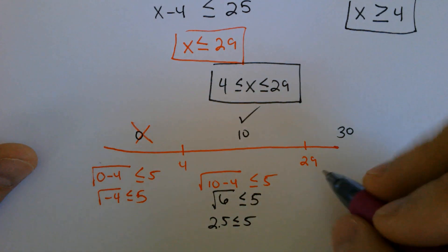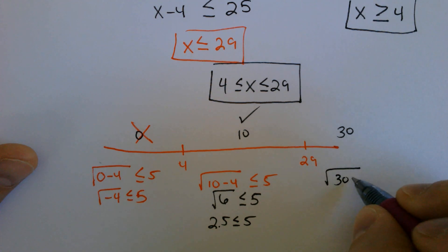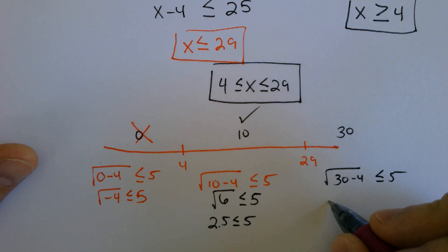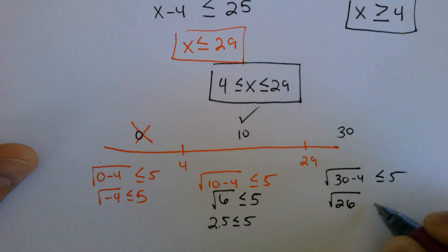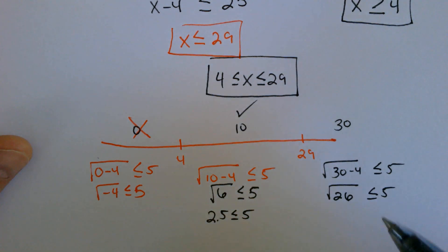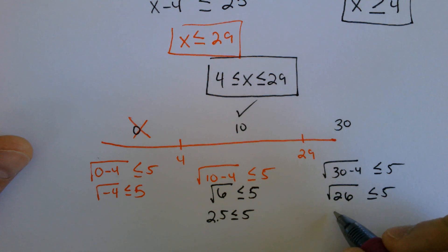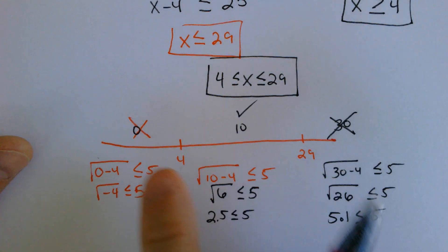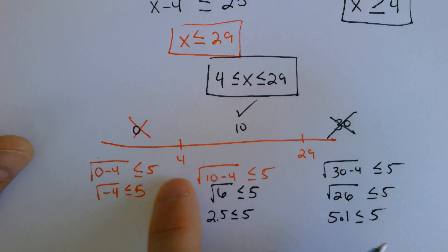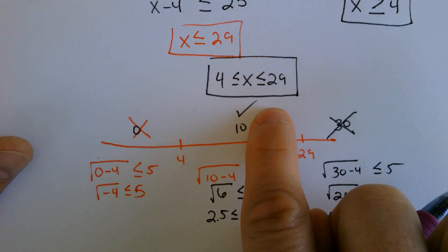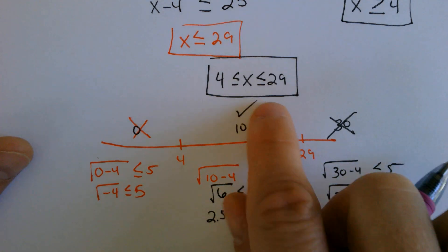Then you can plug in 30. The square root of 30 minus 4, is that less than or equal to 5? Well, that's the square root of 26. The square root of 26 is not less than 5, because the square root of 25 is 5. The square root of 26 is about 5.1. That is not less than or equal to 5. The 30 does not work. The only values that worked were in between 4 and 29. Like I said with our original answer, if you wanted to be lazy, you could stop there. The next two examples you probably can't be lazy.